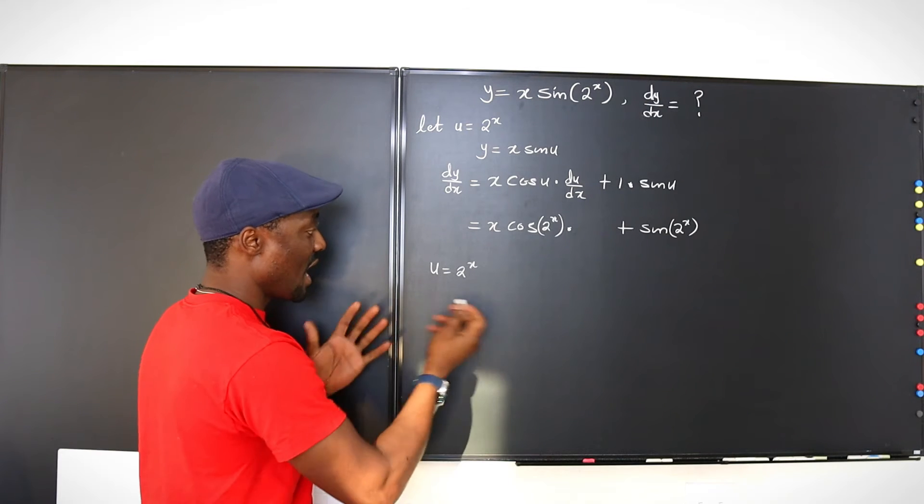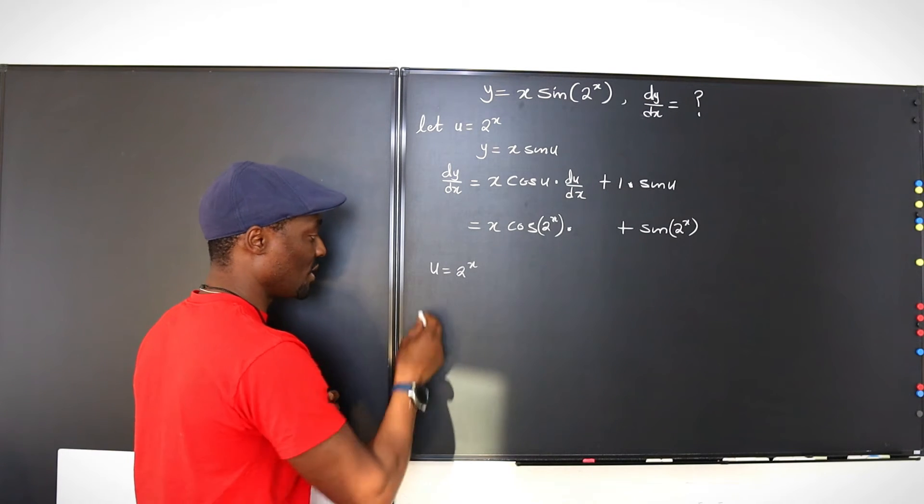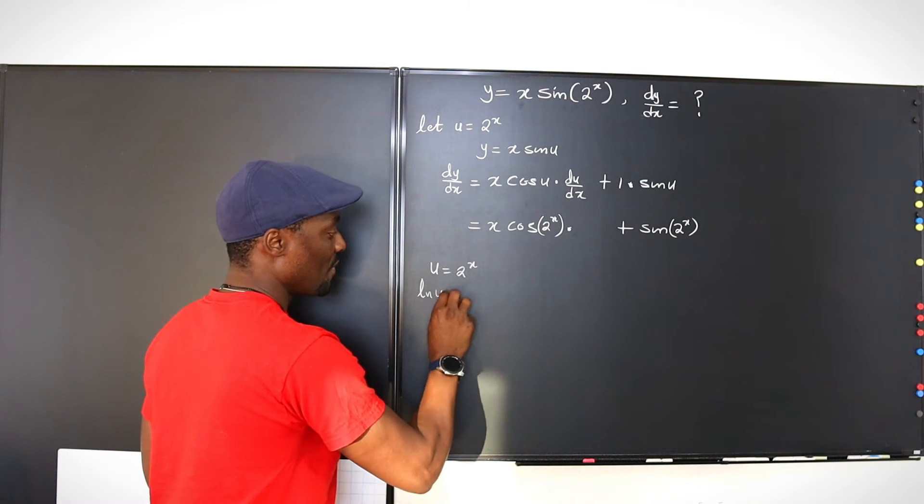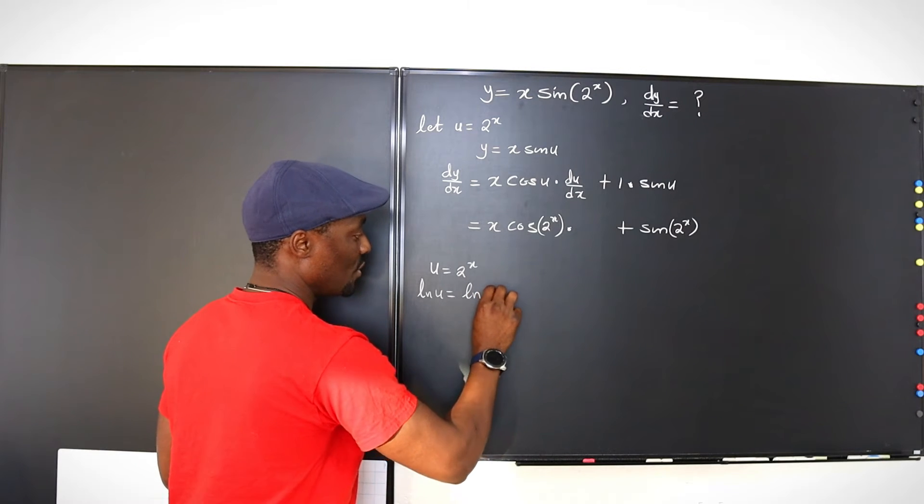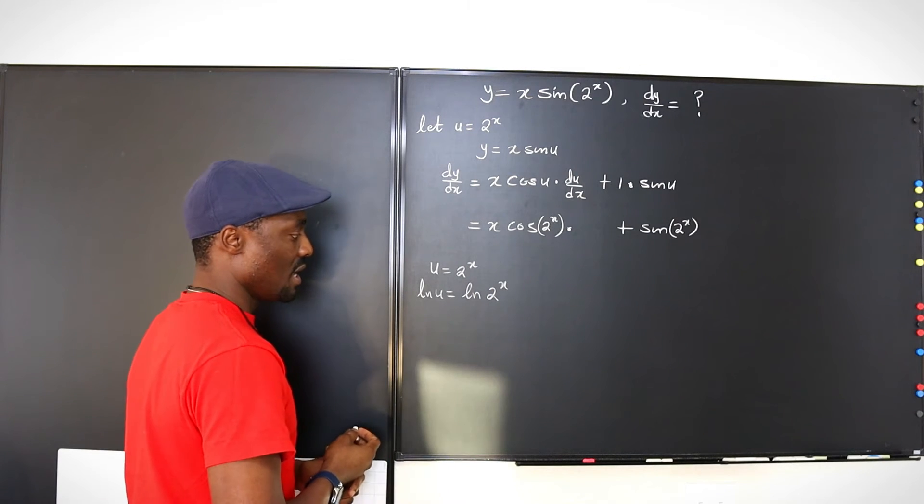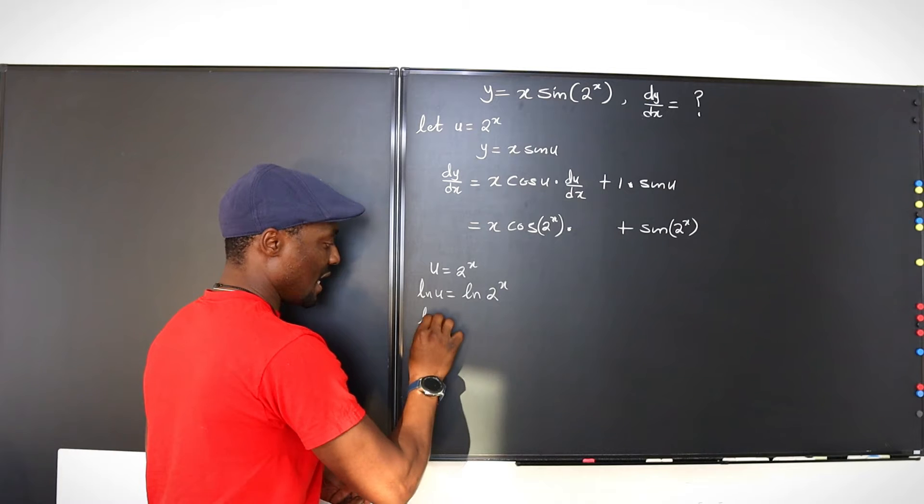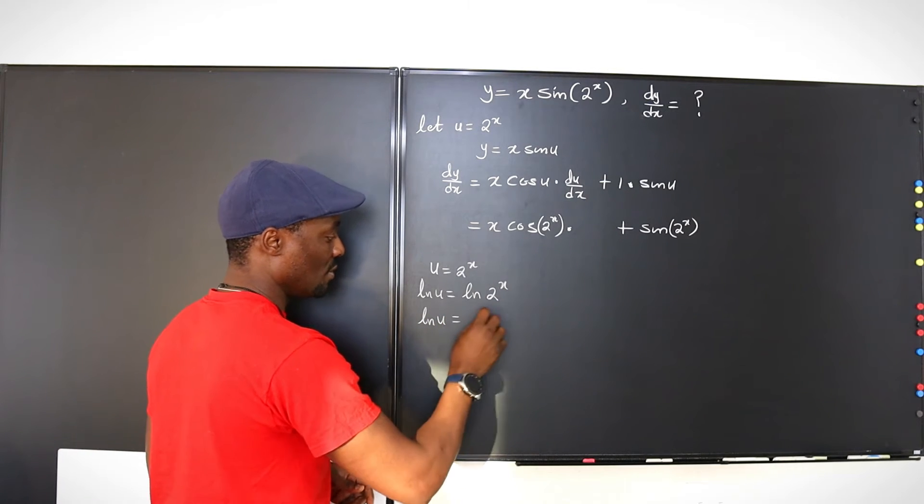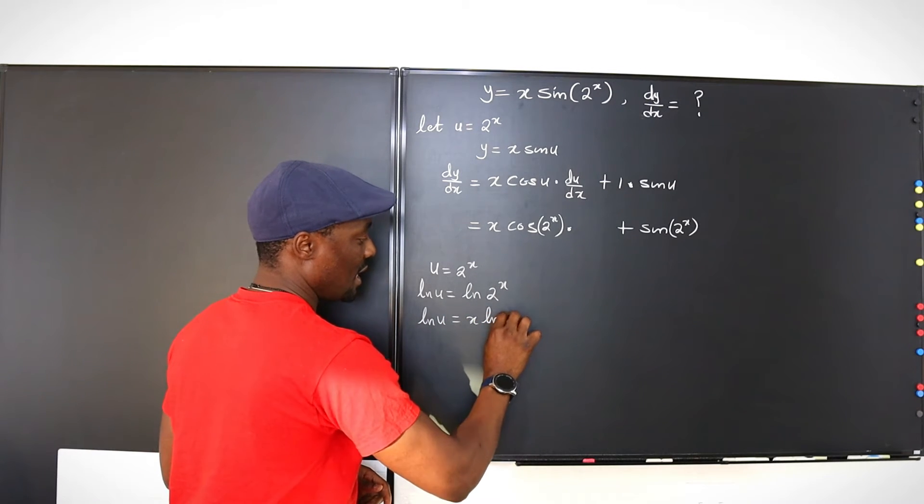So we're going to introduce logarithm, which is natural log is my favorite. And we take the log, natural log of both sides. So we say ln u equals ln 2 to the x. Okay, which means that ln u will be equal to x ln 2.